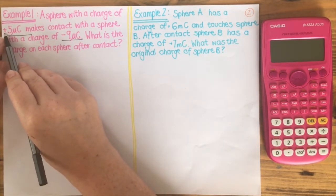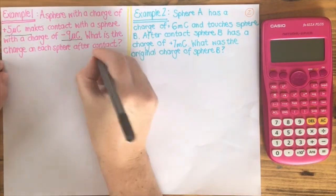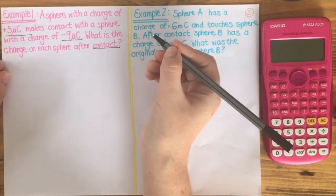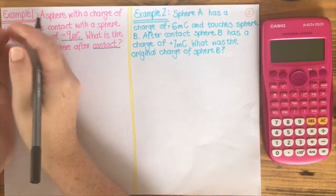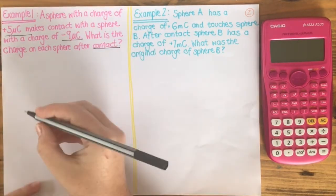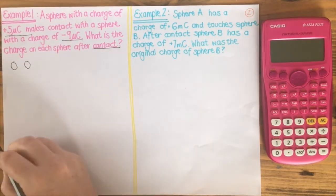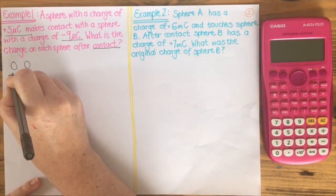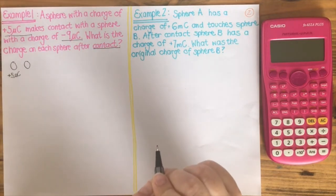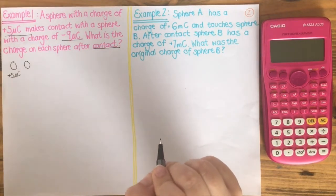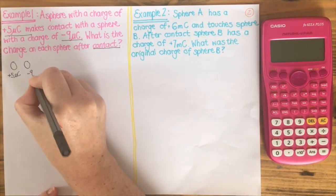We've got a positive and a negative charged sphere. They are making contact. We know that the principle of conservation of charge says that the total charge before is equal to the total charge afterwards. So what we can do is draw our little spheres out — that's plus 5 microcoulombs and the next one is minus 9 microcoulombs.